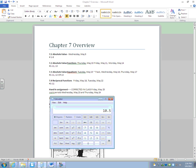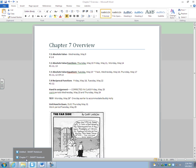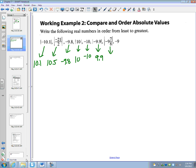9 and 7 eighths. There's my calculator. 7 eighths is 0.875. So it's negative 9.875. But the absolute value of that is going to be 9.875.